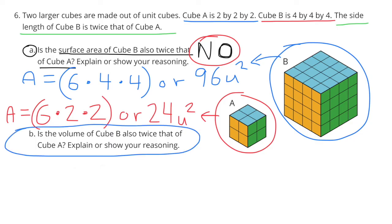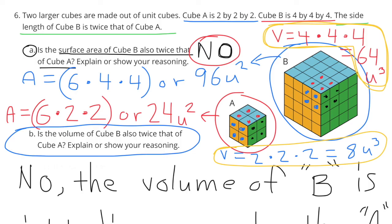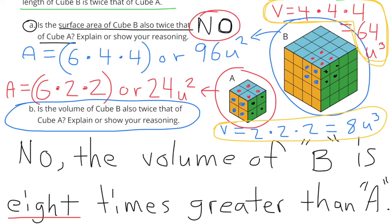Part b: is the volume of Cube B also twice that of Cube A? Explain or show your reasoning. The volume of Cube A is two times two times two, which is eight units cubed. The volume of Cube B is four times four times four, which is 64 units cubed. So to answer the question: no, the volume of Cube B is eight times greater than the volume of Cube A. 64 units cubed is eight times greater than eight units cubed.